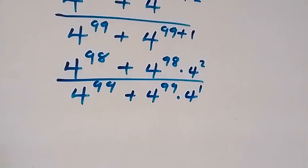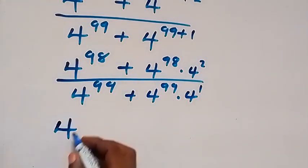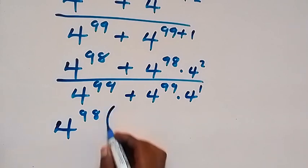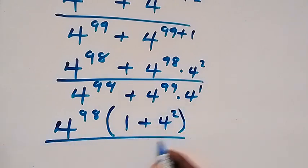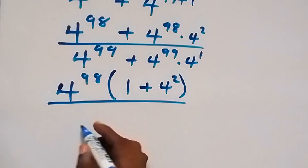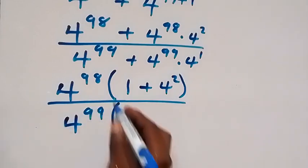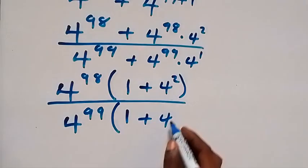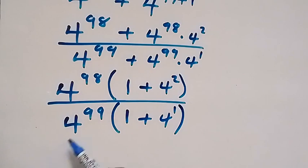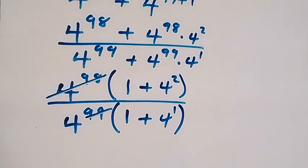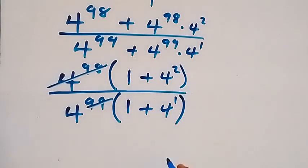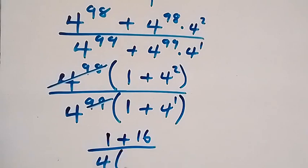We factor out 4 raised to power 98 from the numerator: 4 raised to power 98 times (1 plus 4 squared). We factor out 4 raised to power 99 from the denominator: 4 raised to power 99 times (1 plus 4 raised to power 1). The 4 raised to power 98 and 99 cancel — one factor of 4 remains in the denominator — giving us (1 plus 16) divided by 4 times (1 plus 4), which is 17 divided by (4 times 5).